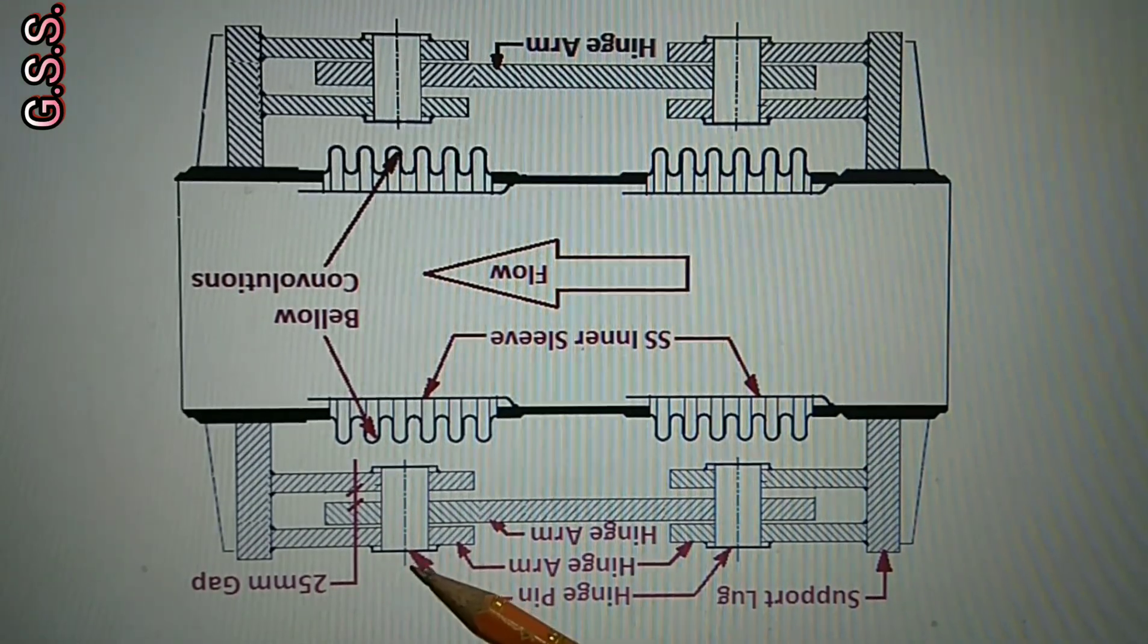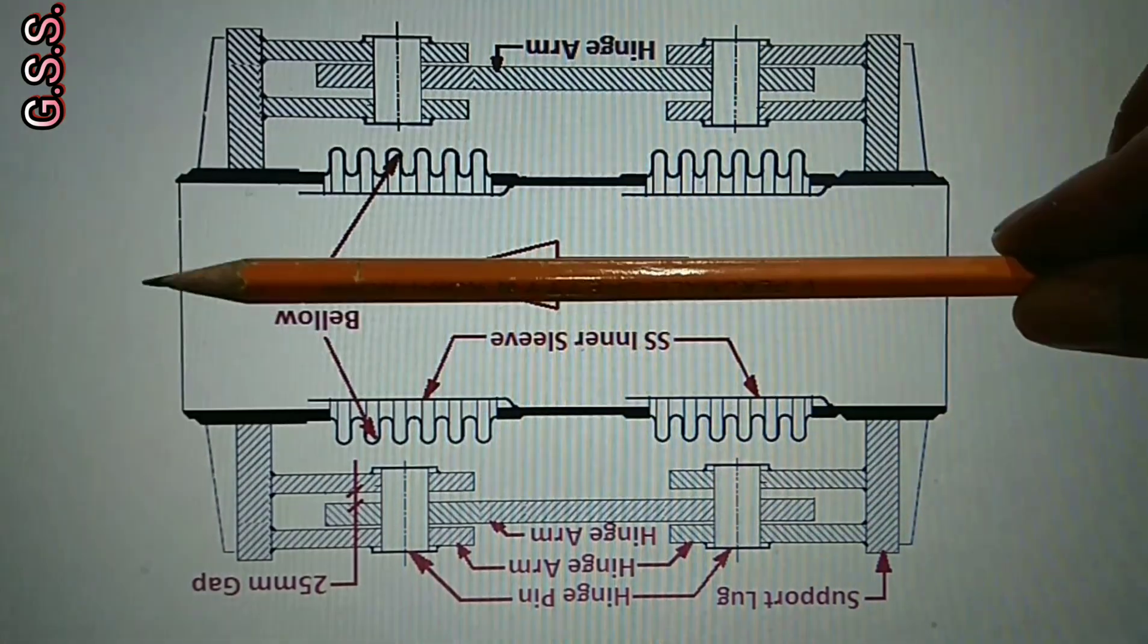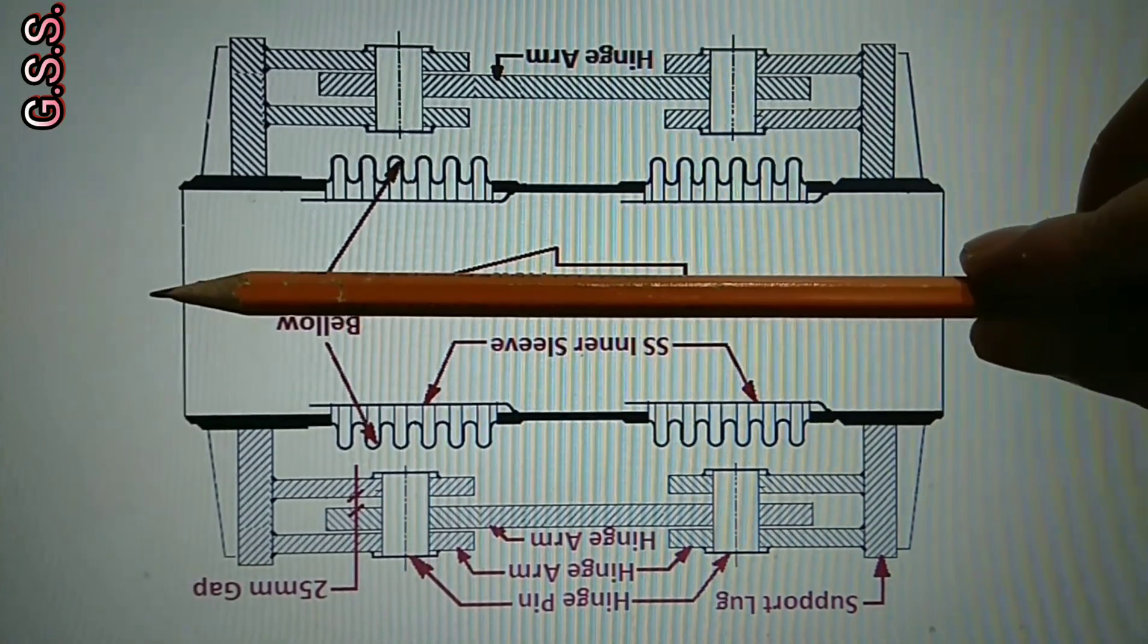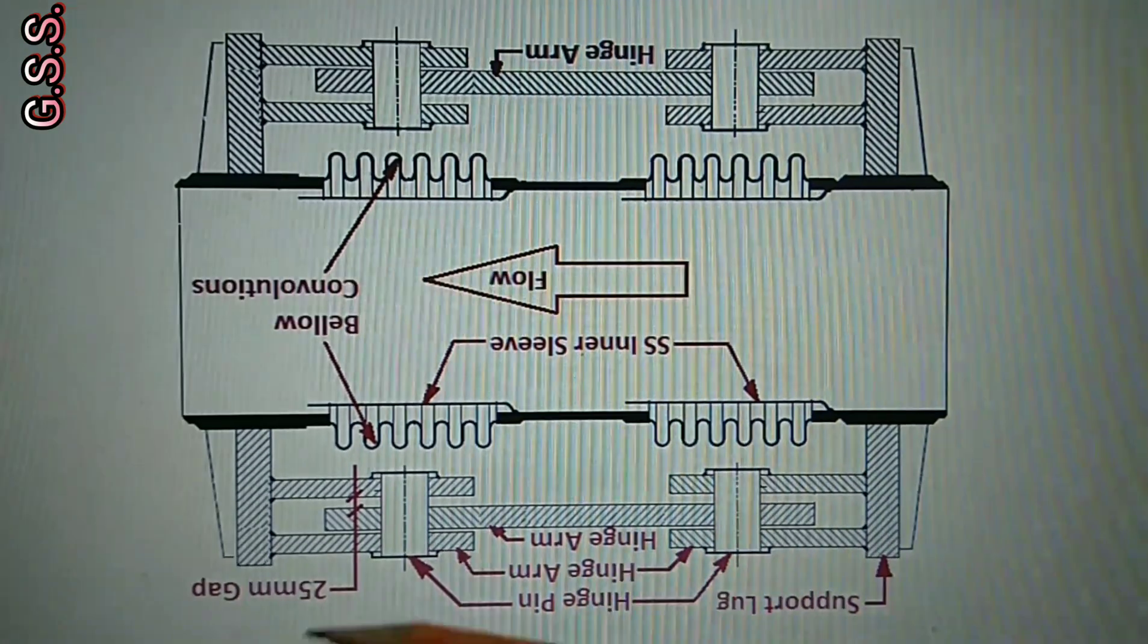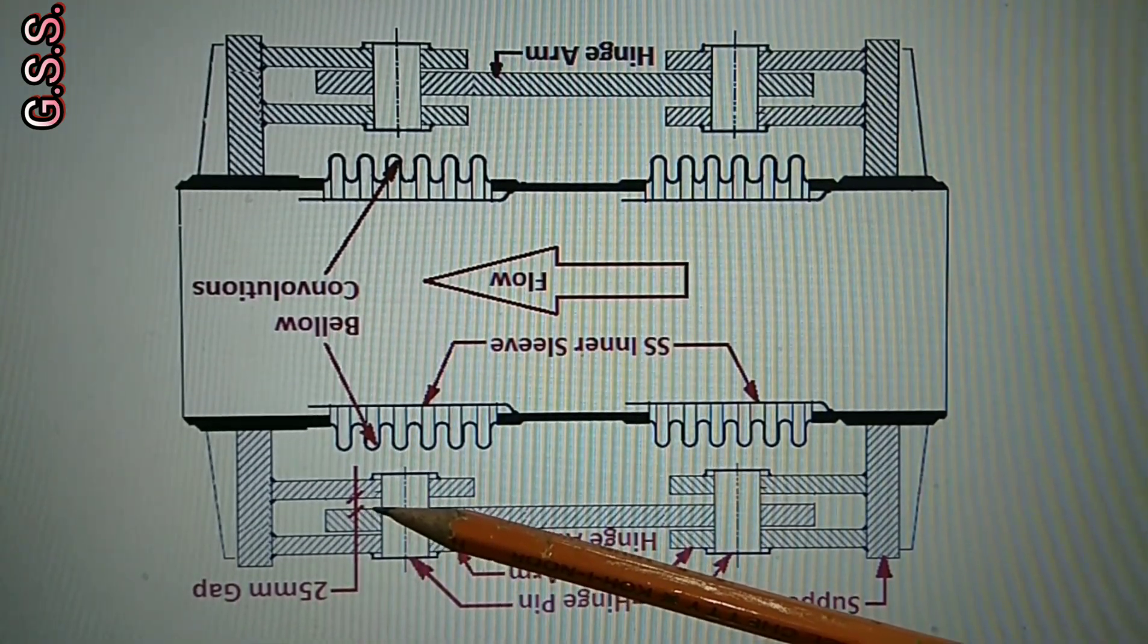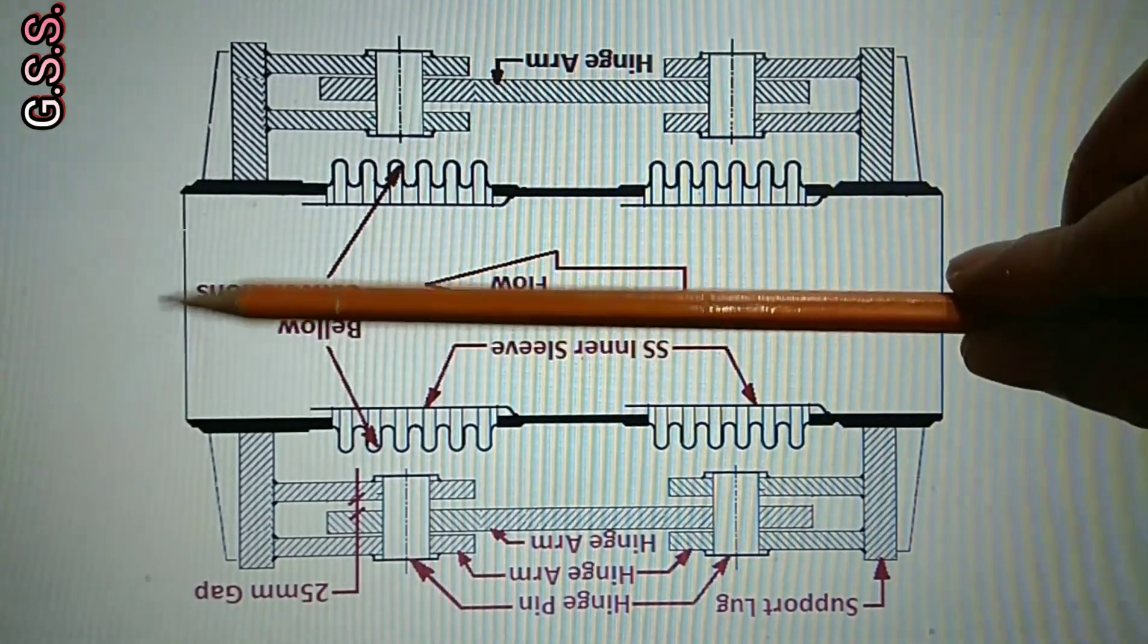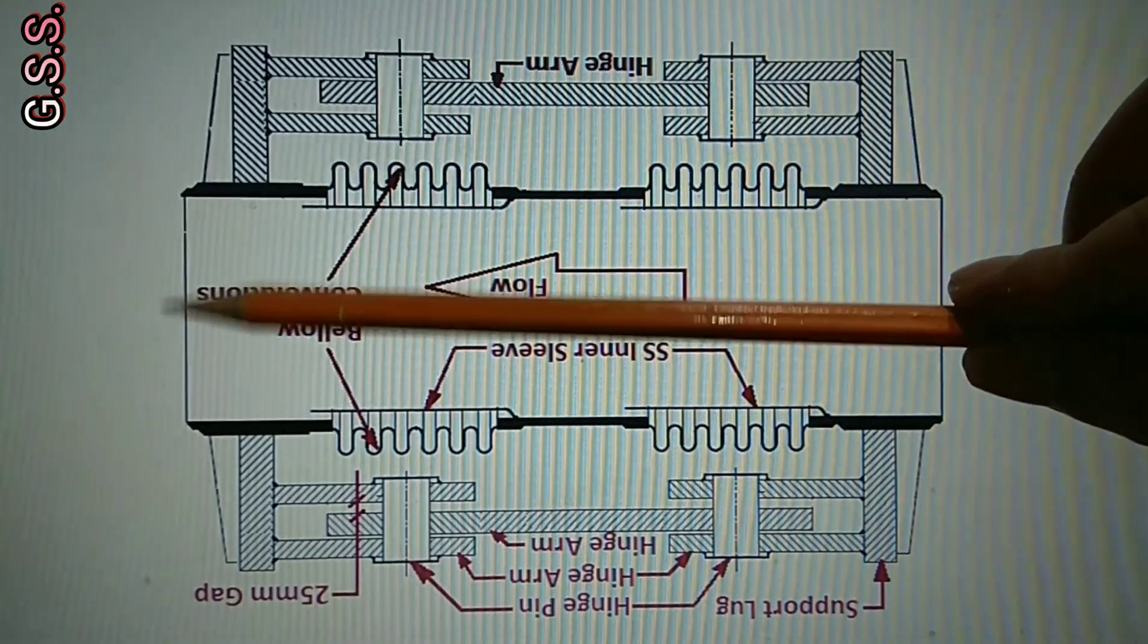The hinge pins allow the bellows to take lateral movement perpendicular to the hinge arm plane like this. And in between hinge arm a gap of about 1 inch is there which allows the bellows to take lateral movement along the hinge plane like this.